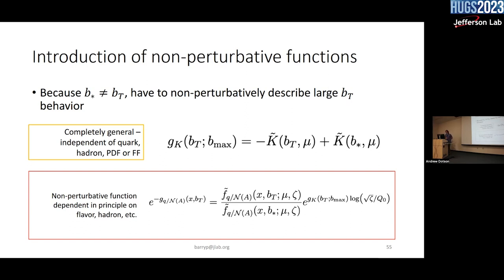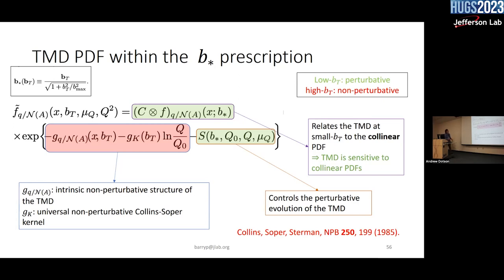We also have to consider the intrinsic non-perturbative TMD structure specific to the PDF or the quark inside a specific hadron. These things are not as universal as the Collins-Soper kernel, but still universal in that if you see a pion in another experiment, it should be related the same way. This non-perturbative function — put in some exponential form — takes a ratio of the TMD at BT to that at B-star. At small BT it should be one, because these guys will be the same. At large BT, this has some non-perturbative description — that's how we describe minus GQ.